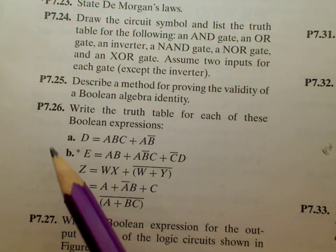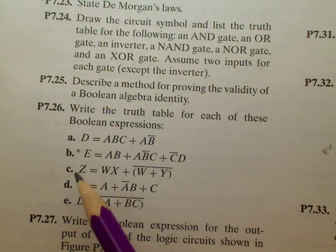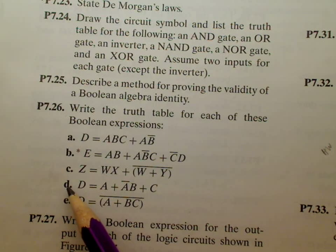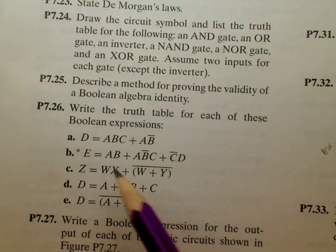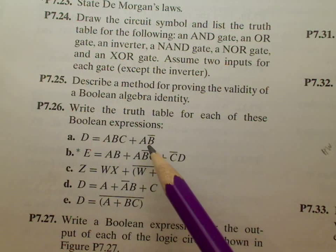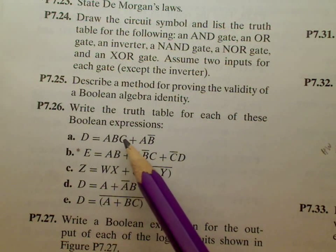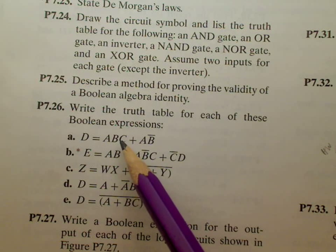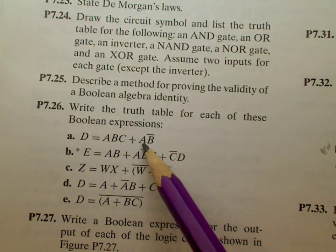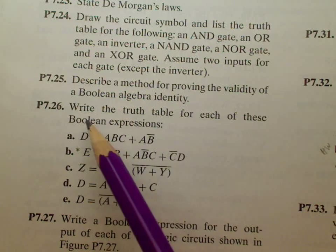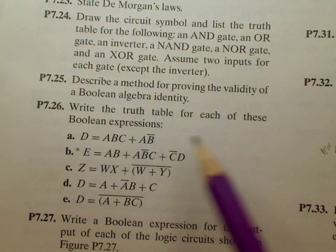Let's look at problem P7.26. For homework you're going to be doing part D. I'm going to do part A as an example here. These are logic expressions, so this is not multiplication - this is actually A and B and C or A and not B. It says write a truth table for each of these Boolean expressions.